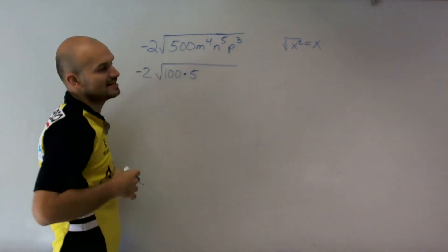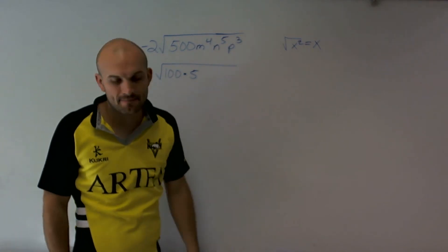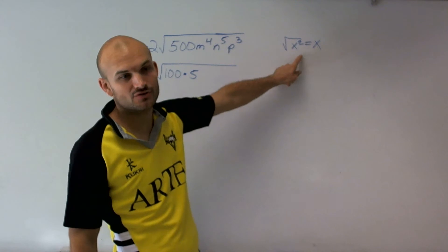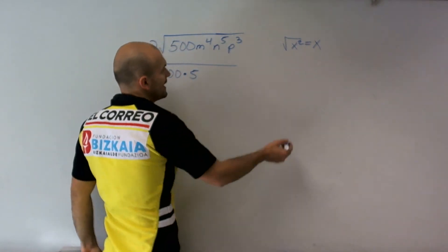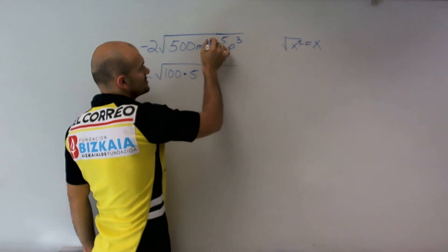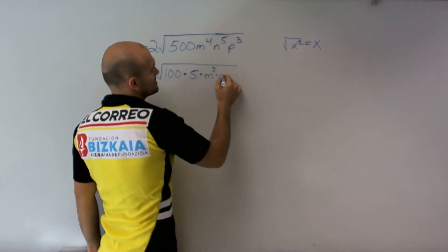Now I need to see how I can rewrite m to the 4th, n to the 5th, and p to the 3rd as a product of a square number that I can take the square root of. m to the 4th can be m squared times m squared.